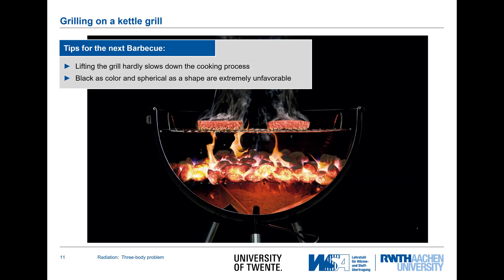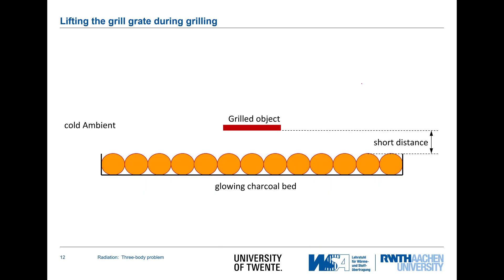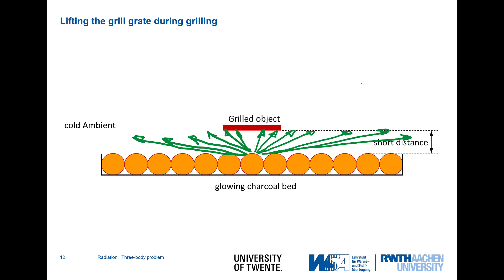Now let's go into some more practical considerations for maybe your next barbecue. There are some bold statements to look into. The first one says: lifting the grill hardly slows down the cooking process. For those who have handled a kettle grill, there are several holes which serve to change the position of the grid a little bit. The second statement is: black color and spherical glass shape are extremely unfavorable. In a simplified view, there's the grilled object, the charcoal, and radiation goes all over the place — some hits the grilled object but a lot goes to the ambience.